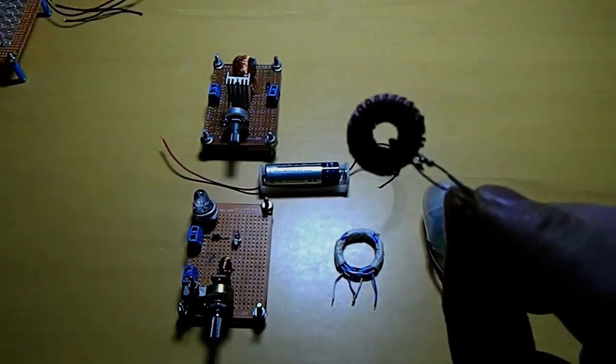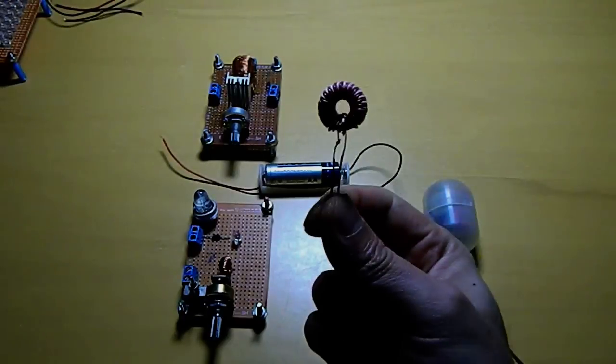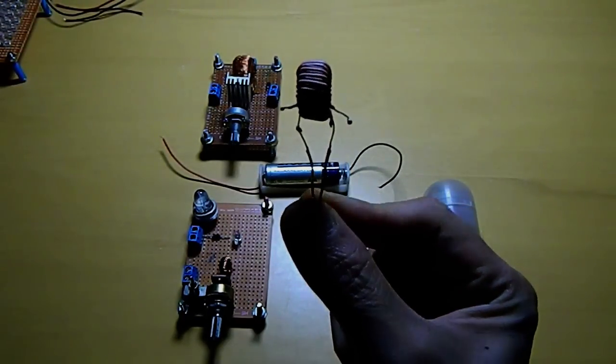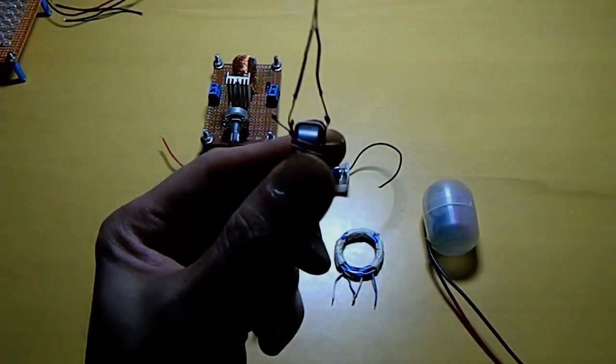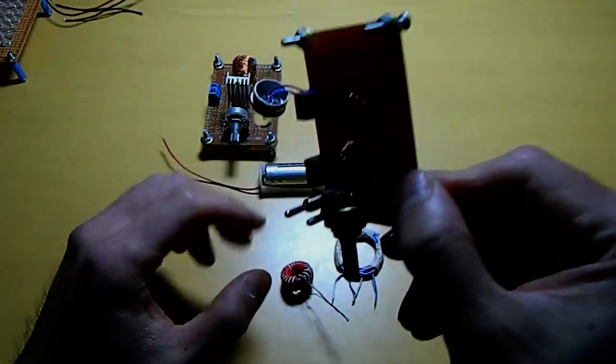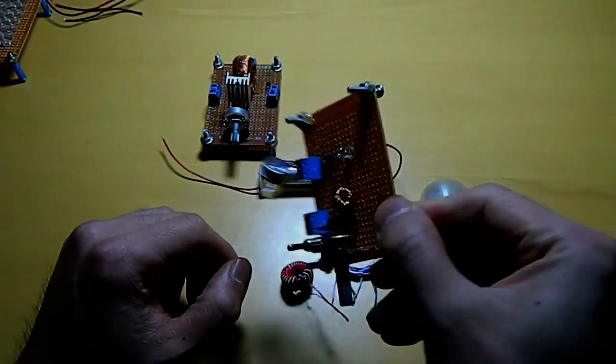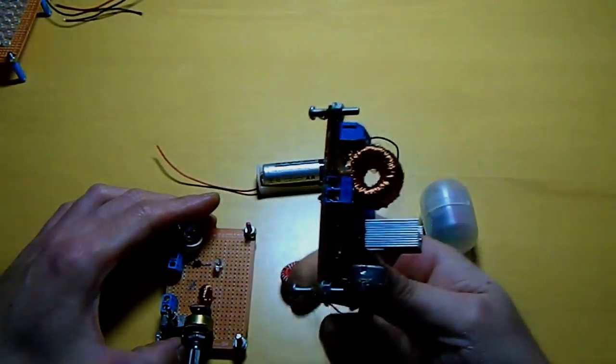Everybody is familiar with this nowadays. This is a Joule thief. It is a toroid winding as a Joule thief. I have a few here. A very small one. Here is a bigger one.